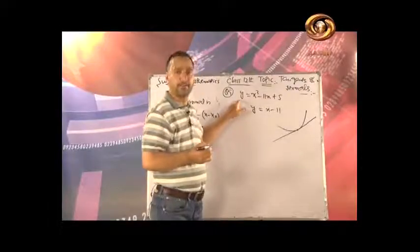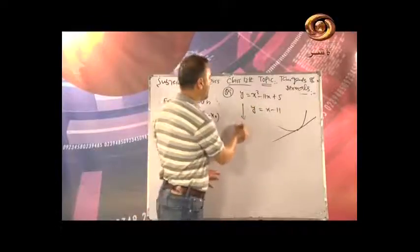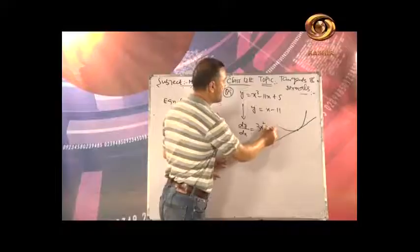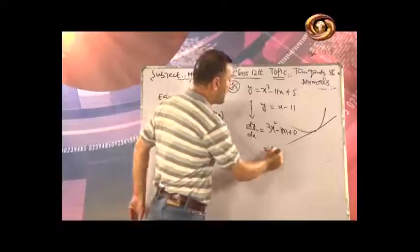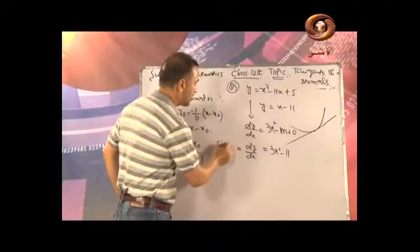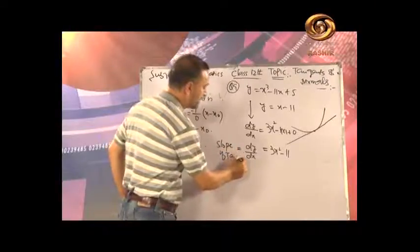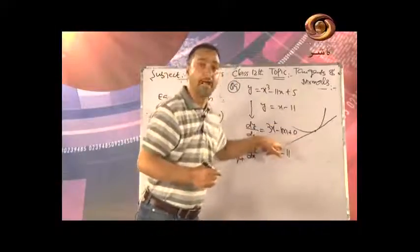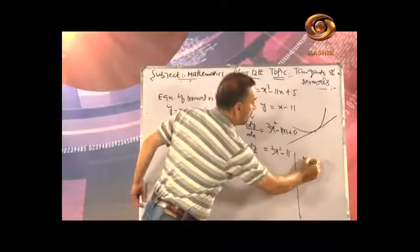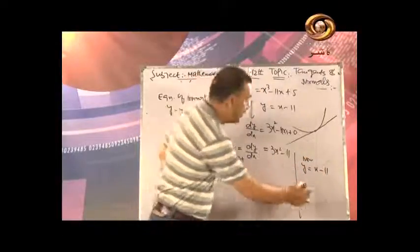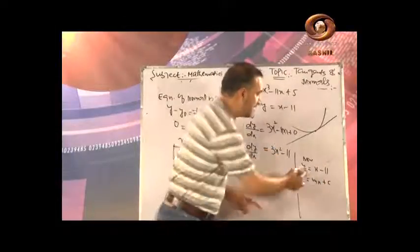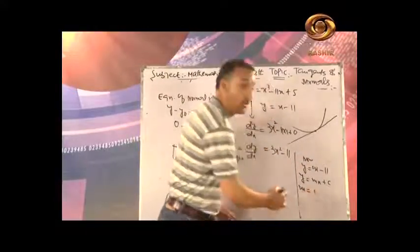First, differentiate y = x³ - 11x + 5: dy/dx = 3x² - 11. This is the slope of tangent. From the given line y = x - 11, comparing with y = mx + c, the slope m = 1. So slope of tangent = 1, meaning 3x² - 11 = 1.